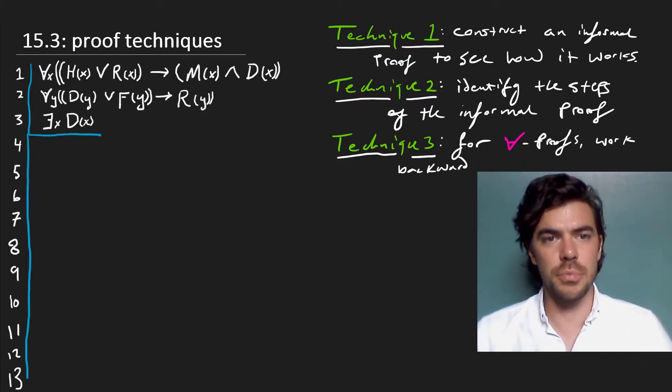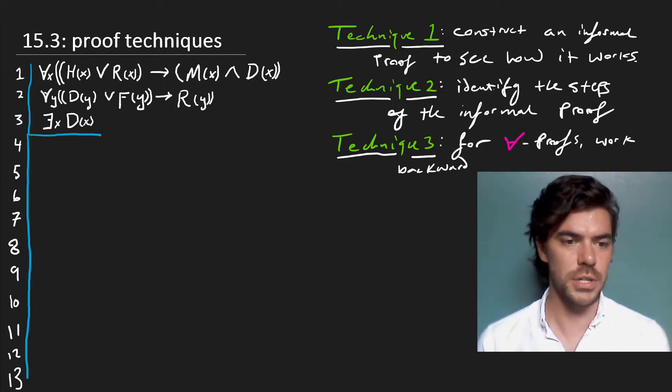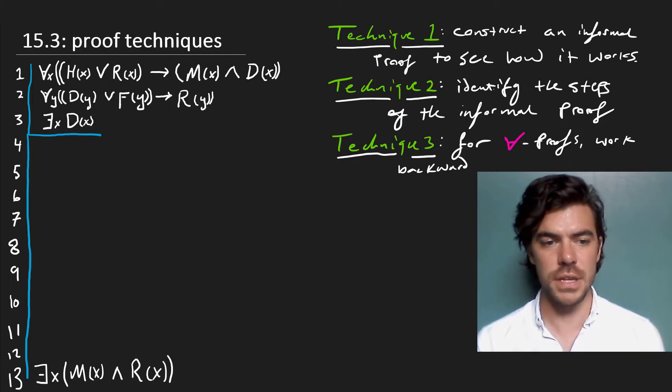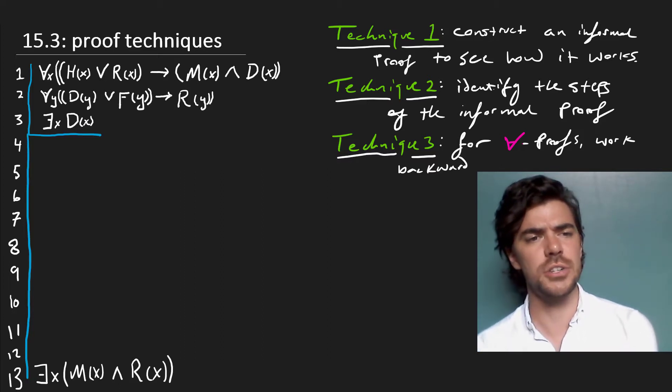Sometimes when you first see a proof like this, it's easy to feel a little bit overwhelmed. But proofs proceed by steps, and the first thing that we can do is to assess where we want to go. So let's look at our goal sentence here. So what we want to prove in the course of this is that something is an M and an R, as we see on line 13.